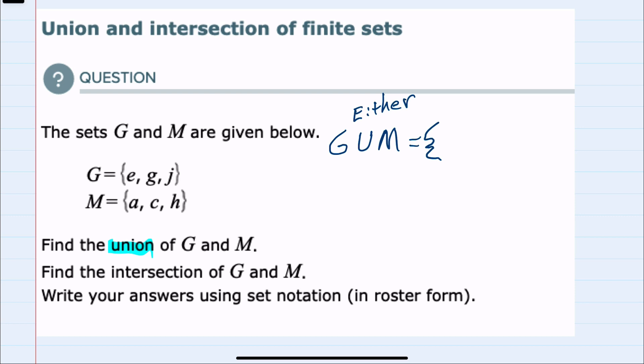If we look through writing the ones that we currently have in alphabetical order, we have an a, a c, an e, a g, an h, and a j. This would be the set of all the elements that are in either G or M.